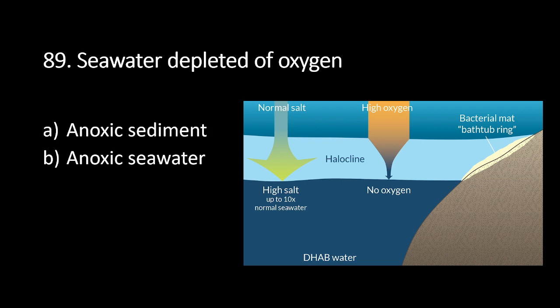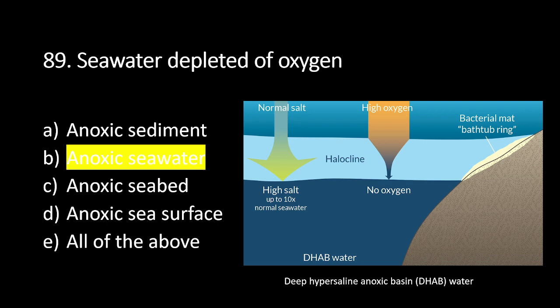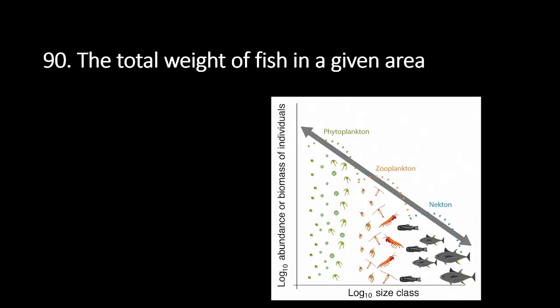Number 89: a seawater depleted of oxygen is called A. Anoxic sediment, B. Anoxic seawater, C. Anoxic seabed, D. Anoxic sea surface, E. All of the above. The answer is B. Anoxic seawater. Anoxic seawater is seawater without oxygen or depleted of oxygen.